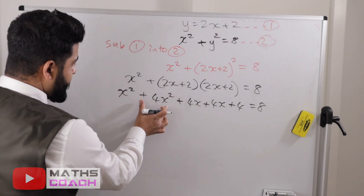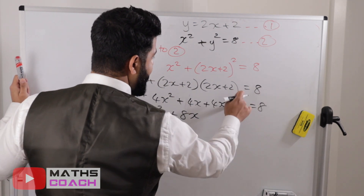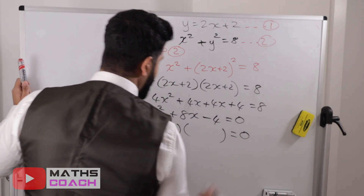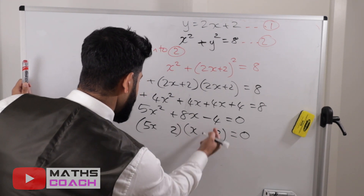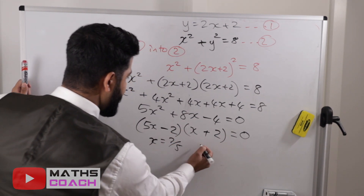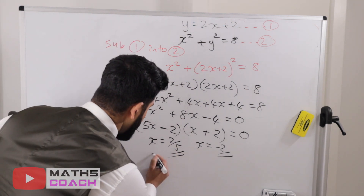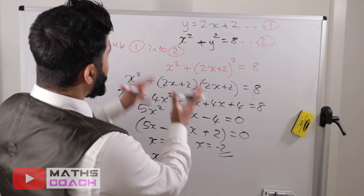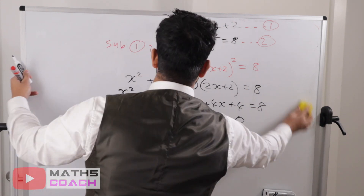Expanding (2x plus 2) squared gives 4x squared plus 8x plus 4. So we have x squared plus 4x squared plus 8x plus 4 equals 8. Collecting like terms: 5x squared plus 8x minus 4 equals 0. Factorizing: (5x minus 2)(x plus 2) equals 0, so x equals 2/5 (which is 0.4) and x equals minus 2.